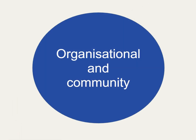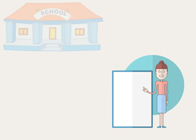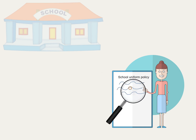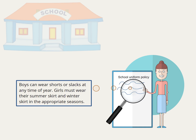At the organisational and community level are the rules in settings such as schools, workplaces and neighbourhoods. An example of this might be: girls are required to wear skirts at the local high school as part of their uniform.